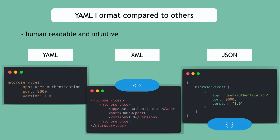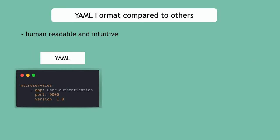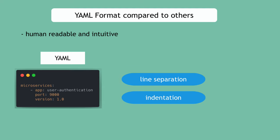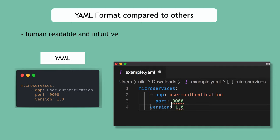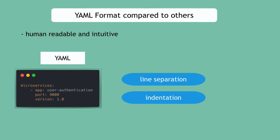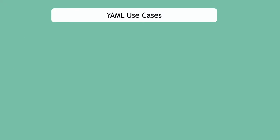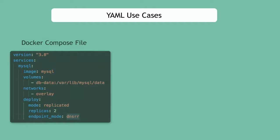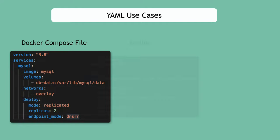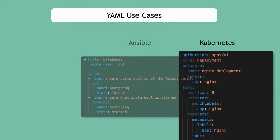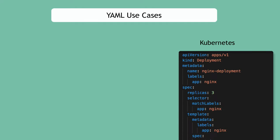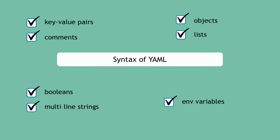In XML and JSON, data structures are defined using special characters. In XML you have angle brackets, in JSON you have curly brackets, and in YAML you don't have those special characters. How data structure is defined in YAML is through line separations and spaces with indentations. That's why you can indent and space in XML and JSON as you wish, but in YAML you get a validation error if you have even one single space wrong. This makes YAML the cleanest, most human-readable format of all three.